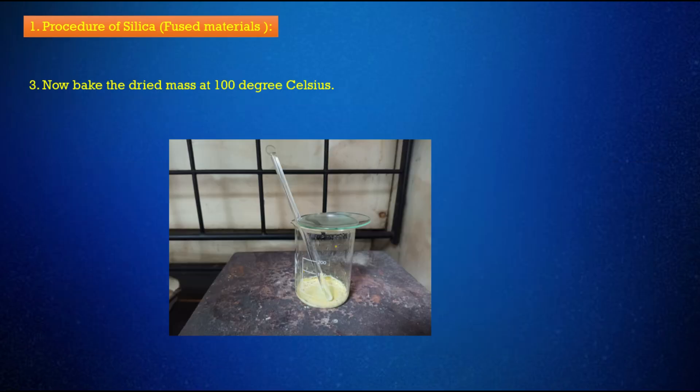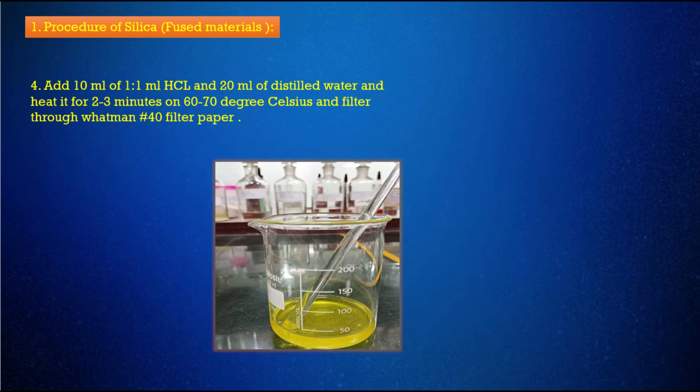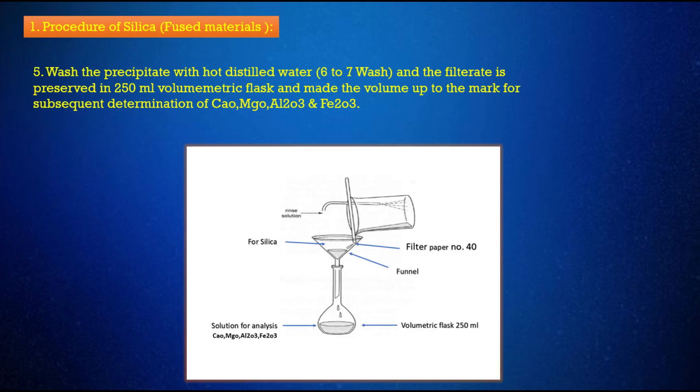Step 3: Bake the dried mass at 100 degrees Celsius. Step 4: Add 10 milliliters of 1:1 concentrated HCL and 20 milliliters of distilled water, and heat it for 2-3 minutes on 60-70 degrees Celsius, then filter through Whatman number 40 filter paper.